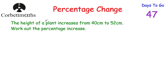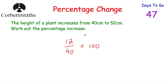Now let's look at another one — this is a non-calculator question, so I'm putting down my calculator. The height of a plant increases from 40 centimeters to 52 centimeters. Work out the percentage increase. It's percentage increase, so we're going to use the formula: change over original times 100. The change is 52 minus 40, which is 12, divided by the original, 40 centimeters, multiplied by 100.